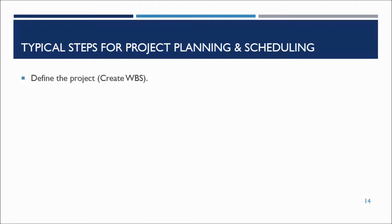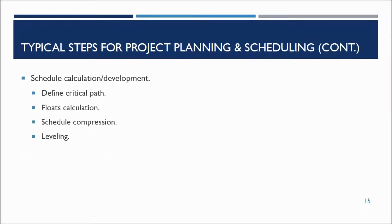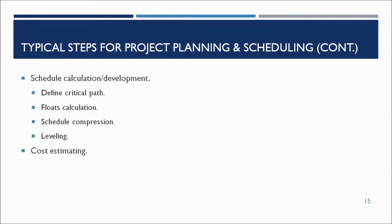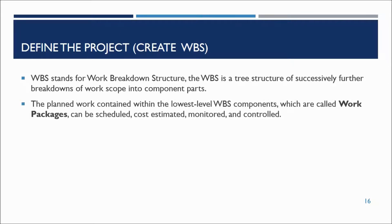Typical steps for scheduling might include creating a WBS to define the project, listing project activities, sequencing the activities, estimating resources and duration of activities, schedule calculation to define the critical path and perform the required leveling, cost estimating, and budget developing. Creating a work breakdown structure is the process of subdividing project deliverables and project work into smaller, more manageable components. The lowest level WBS components are called work packages.